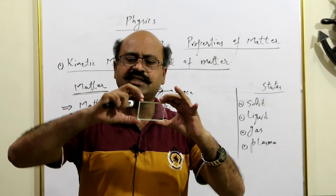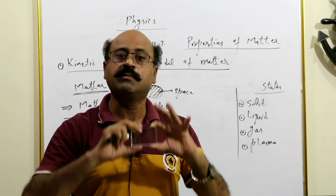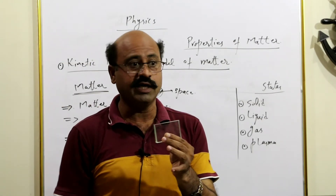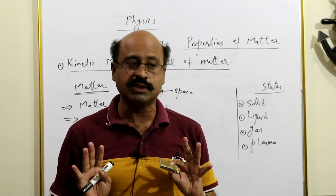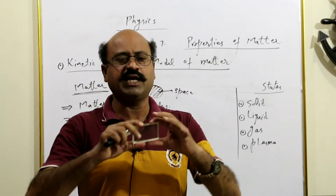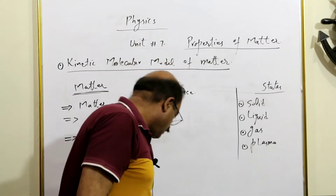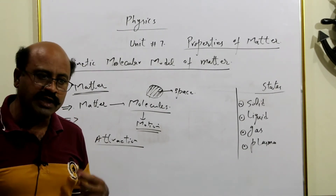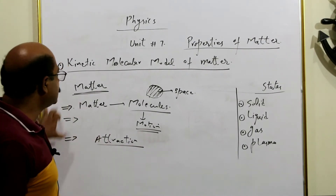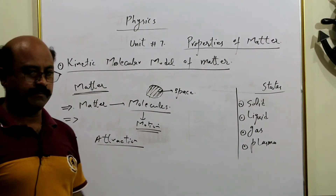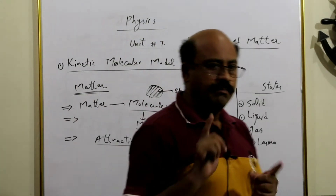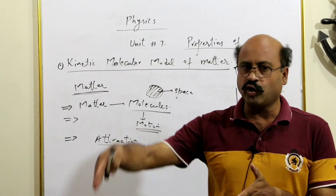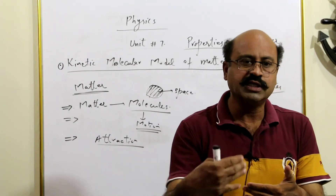Jo molecules hain, un ki jo attraction zyada hai — external force zyada daali, neeche paink ke giraenge toh ya toh break ho ga, shape change ho gi, shatter ho jayega. Okay, so molecules move in three possible ways — these are the kinetic molecular model of matter: made up of molecules, in motion, and molecules attract each other.